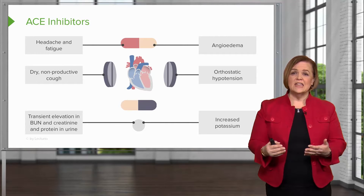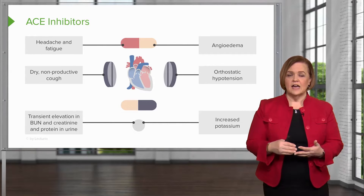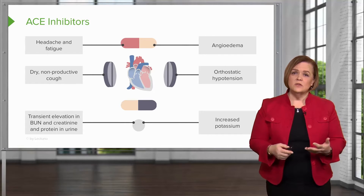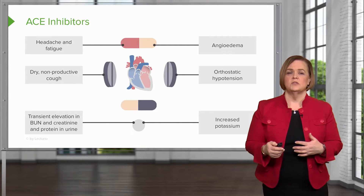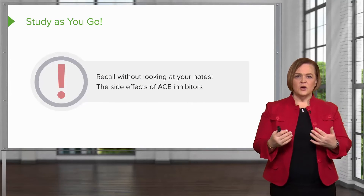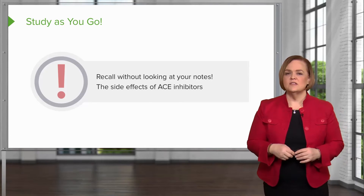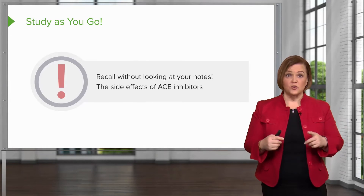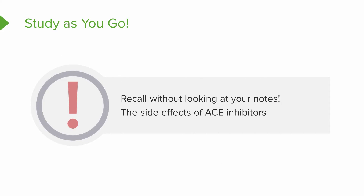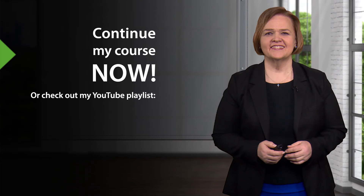That's important to know about ACE inhibitors, but it's not the most important. Angioedema, cough, and elevated potassium are top priorities. Don't forget about orthostatic hypotension — ACE inhibitors have pretty significant orthostatic hypotension, particularly with the first dose effect. Now here's what I want you to do — I call this 'study as you go.' Without looking at your notes, see how many side effects for ACE inhibitors you can recreate. If you're really up to the challenge, do it head to toe.